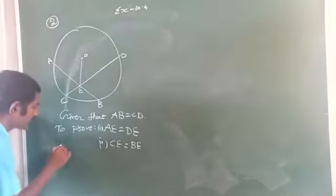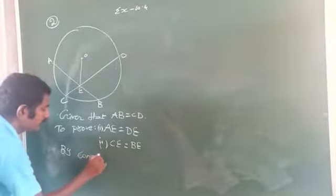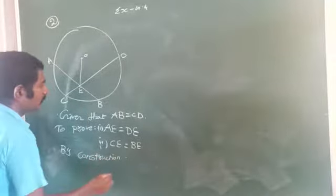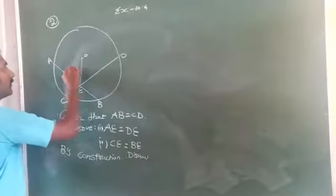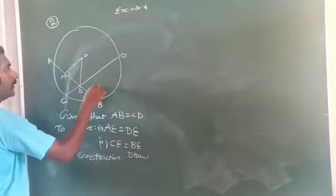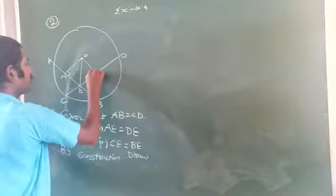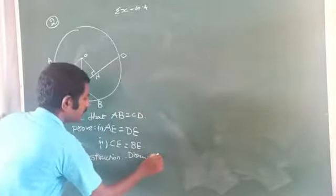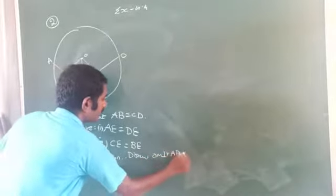By construction, what we can do: draw a perpendicular from center O to AB and name the foot as M, then draw a perpendicular from O to CD and name the foot as N. That is, OM perpendicular to AB and ON perpendicular to CD.